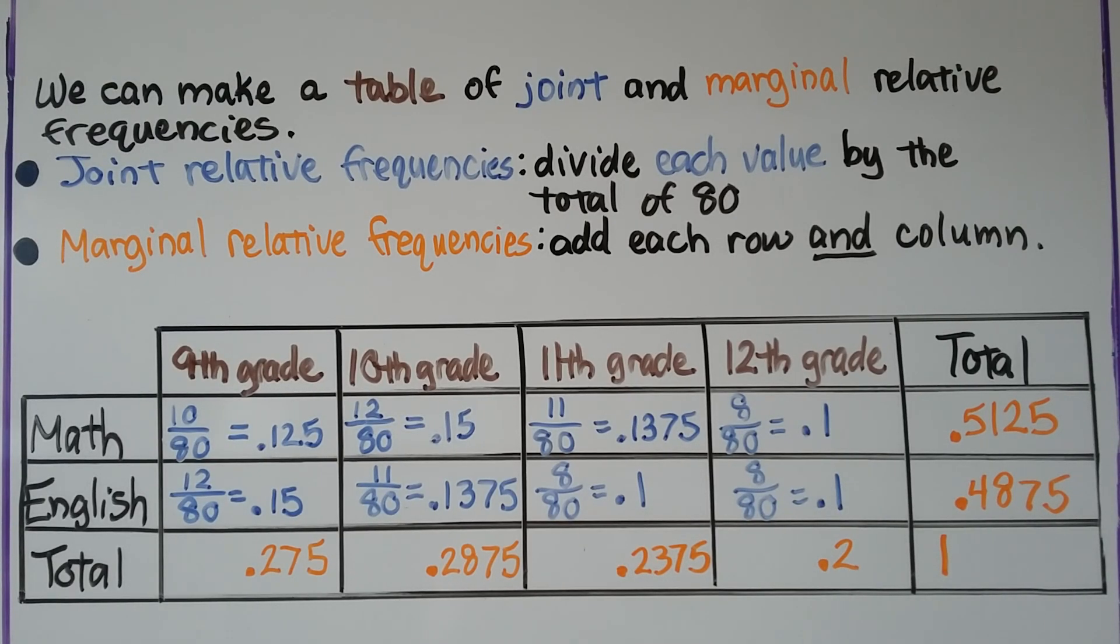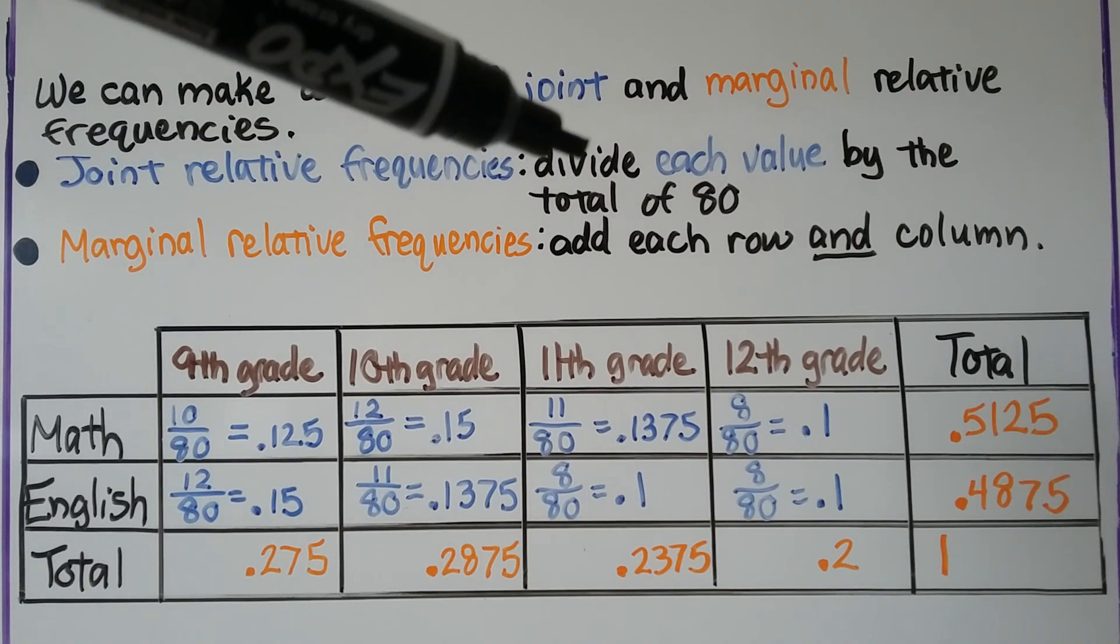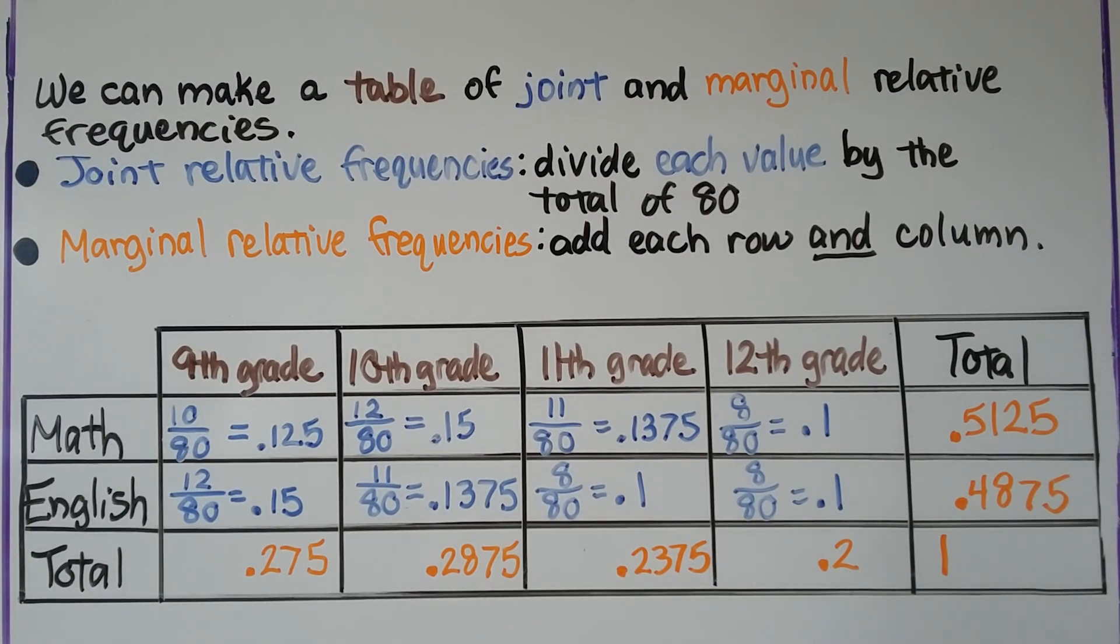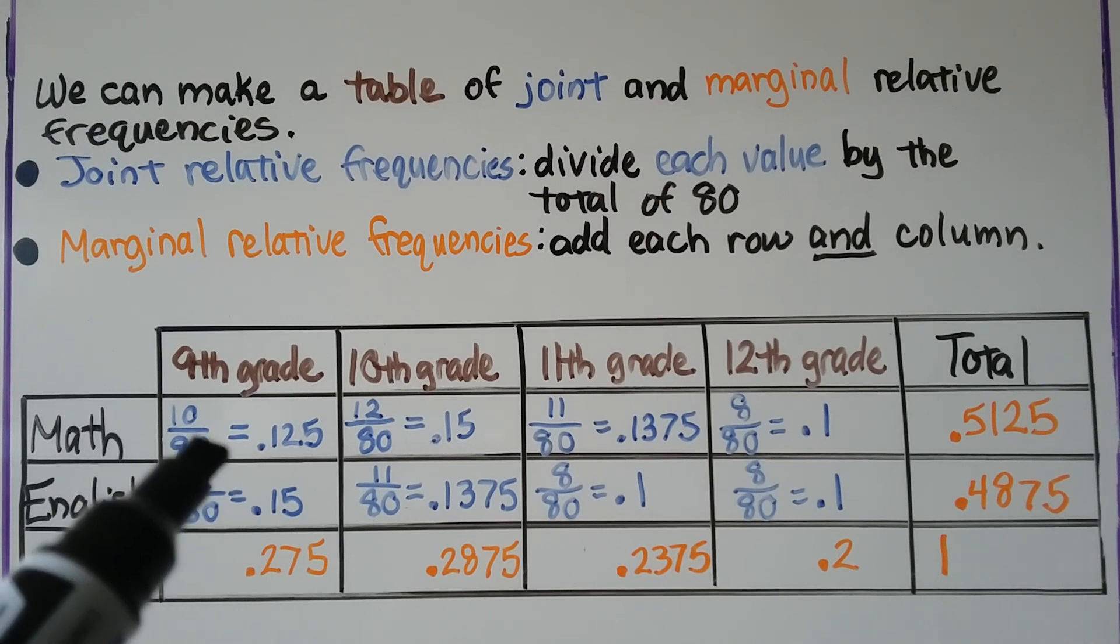We can make a table of joint and marginal relative frequencies. For the joint relative frequencies we divide each value by the total of eighty. So for math in ninth grade, ten said they liked math so we have ten eightieths which is equal to 0.125.